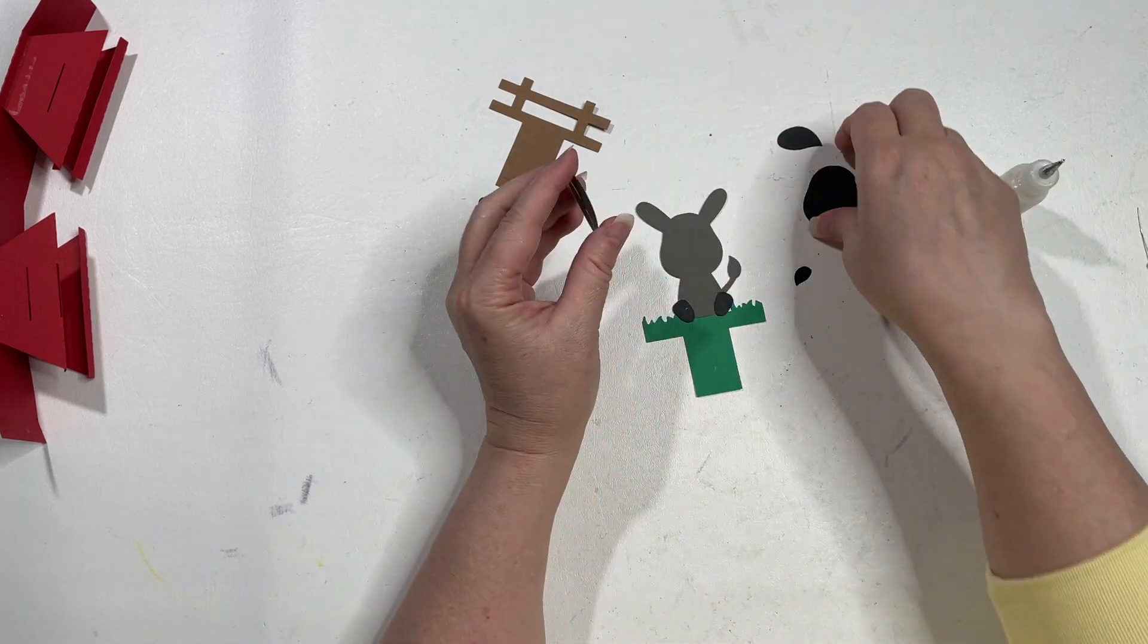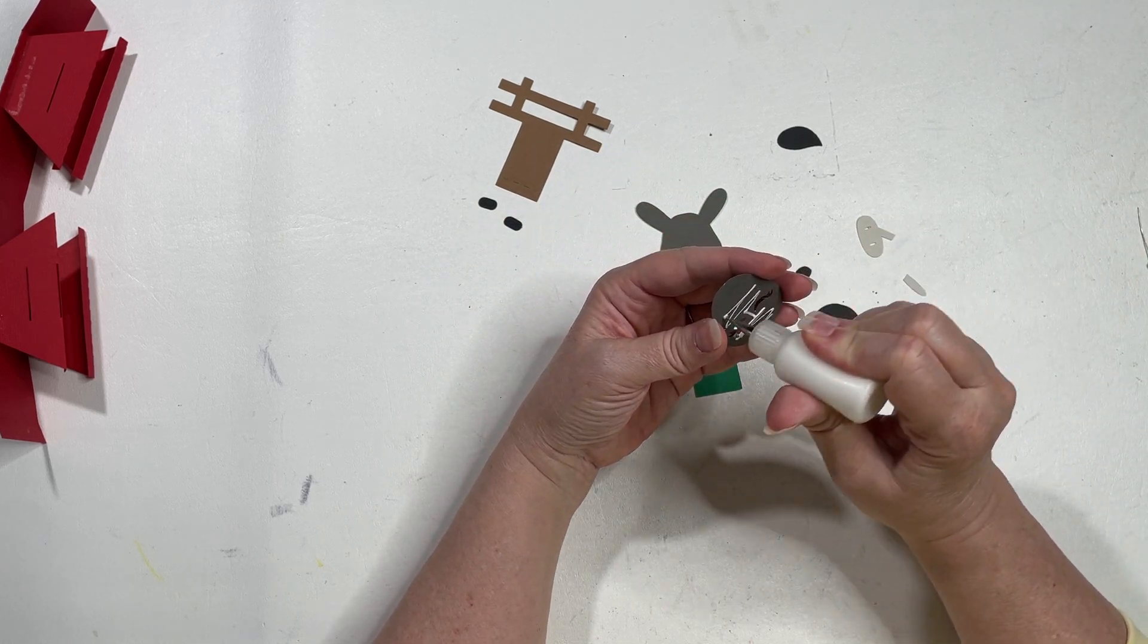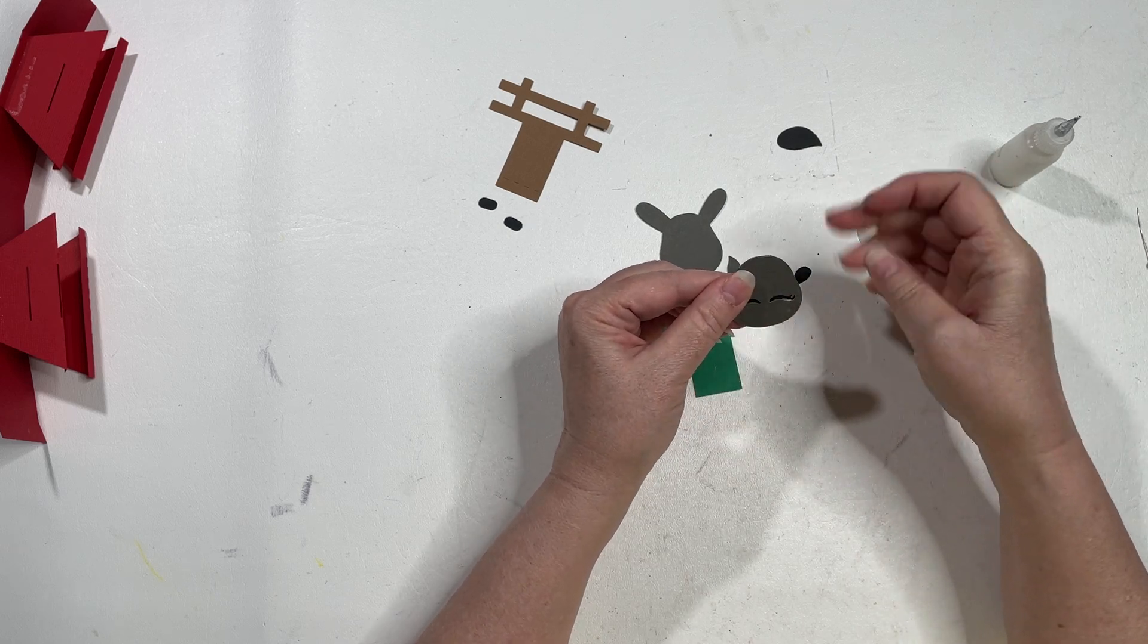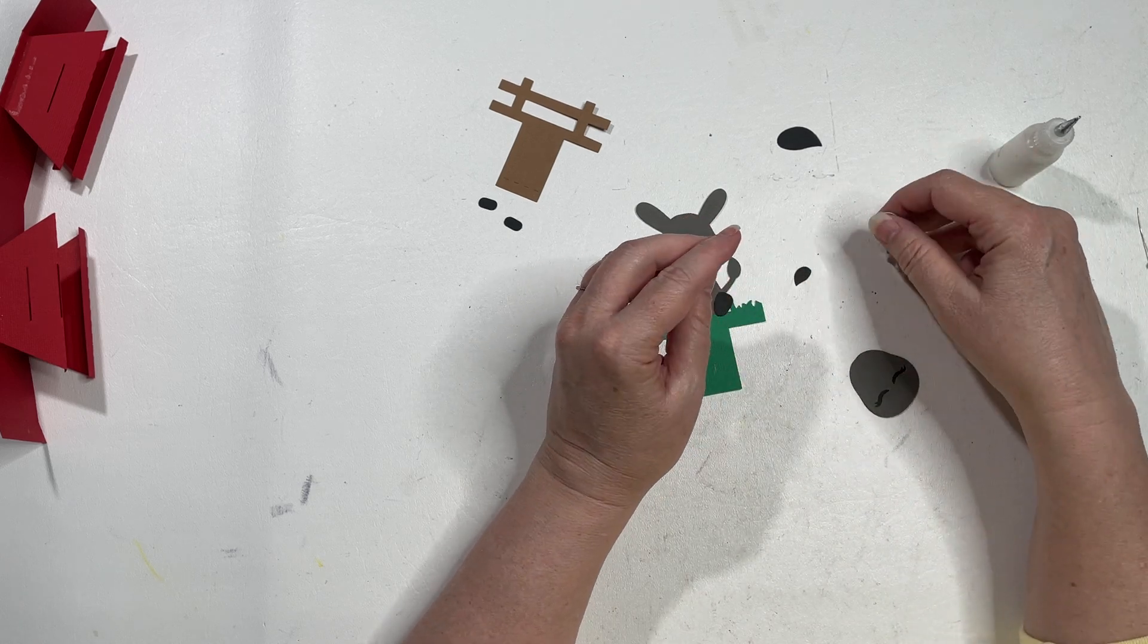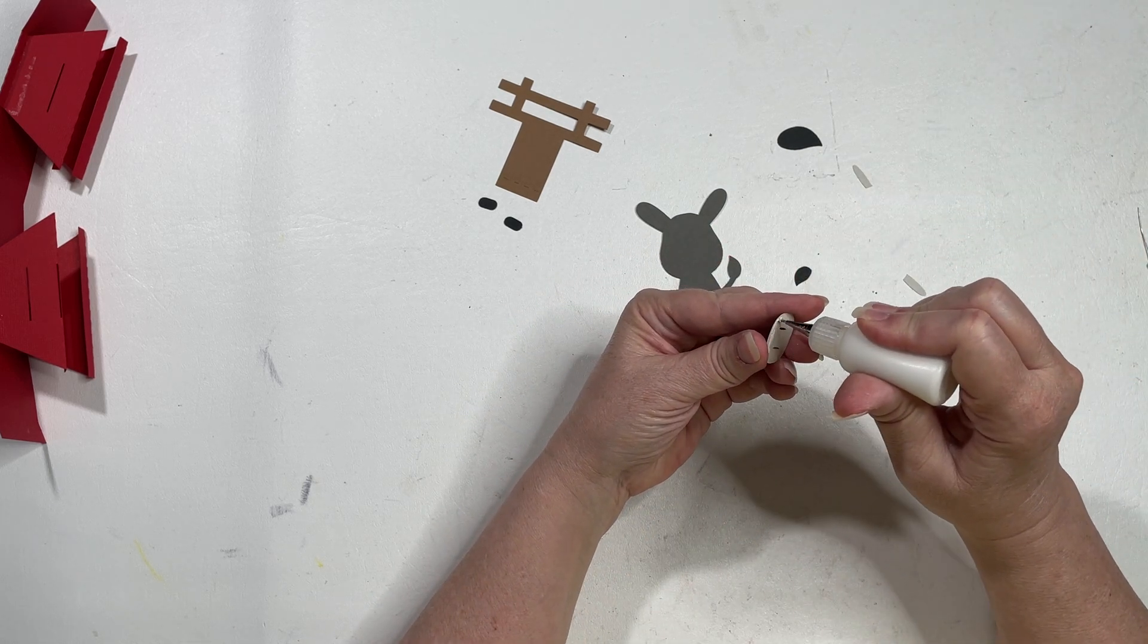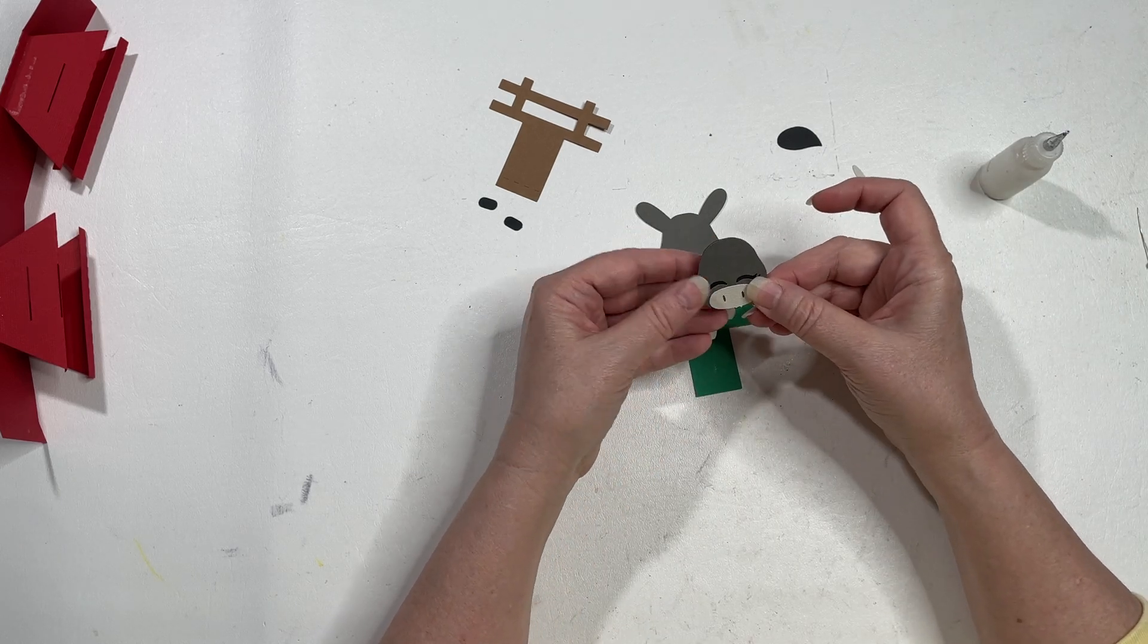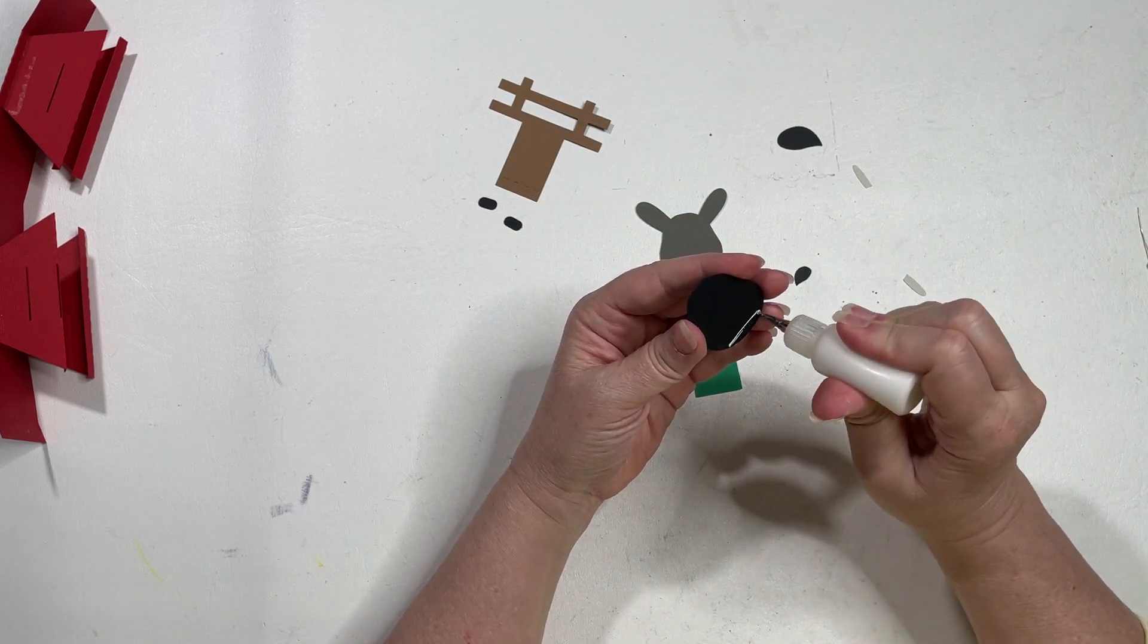There we are, and we're going to do his head with the backing for his eyes and his nose. This is just going to line up right at the bottom here. I'm going to go ahead and put this in place.